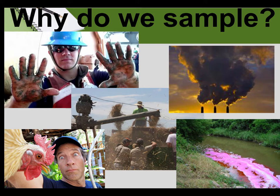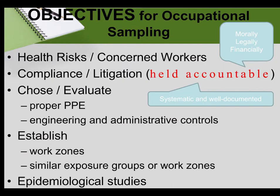So why do we sample? There are different objectives for sampling. We do it to evaluate health risks or to answer the concerns of workers, of course for compliance and litigation purposes. We do it to choose or evaluate the effectiveness of our personal protective equipment, engineering, or administrative controls. We also sample to establish work zones, similar exposure groups, or for epidemiological studies.